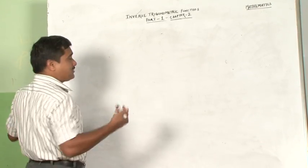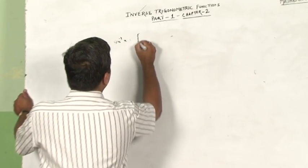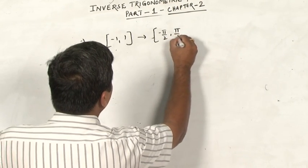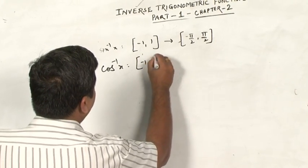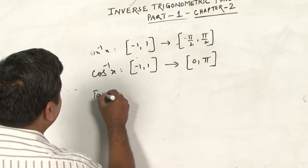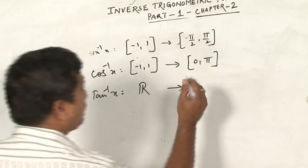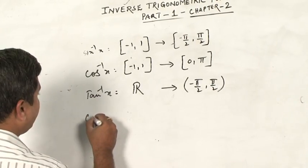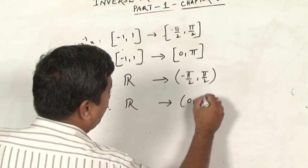Let us first enlist all the principal value branches of the inverse trigonometric functions. Sin inverse x has domain [-1, +1] mapping to [-π/2, +π/2]. Cos inverse x has [-1, +1] mapping to [0, π]. Tan inverse x has domain ℝ, mapping to (-π/2, +π/2). Cot inverse x has domain ℝ mapping to the open interval (0, π).